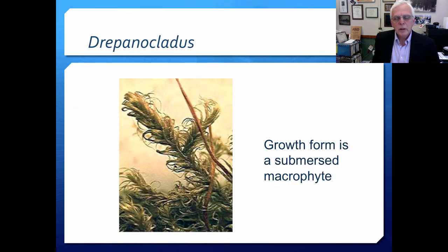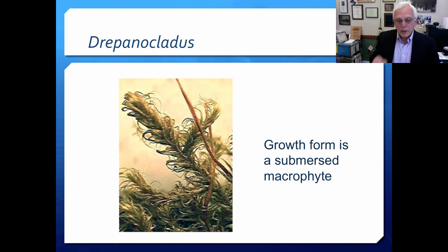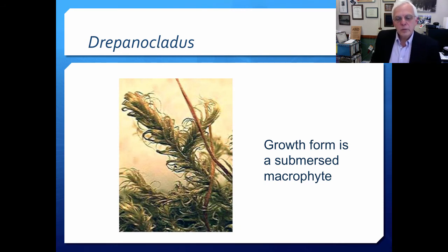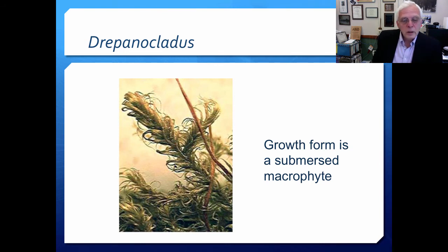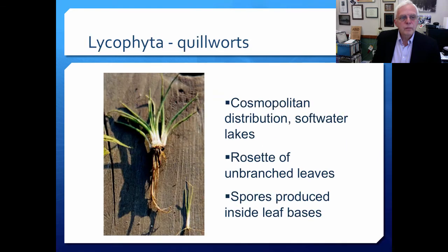Here's Drepanocladus, another example. This is a submersed macrophyte growth form. Because they really don't have vascular tissue, these mosses can exist down at very great depths compared to other kinds of vascular plants.